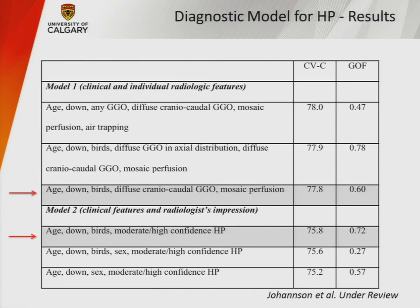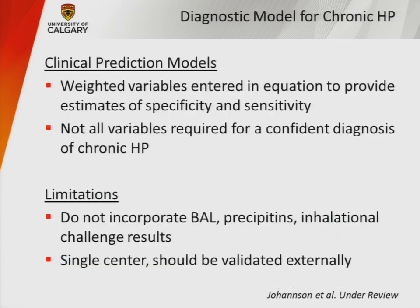For model one, based on individual radiographic features scored on HRCT, the important variables were age — typically middle age, since younger patients are more likely to have CTD and older patients more likely to have IPF — a history of down or bird exposure, and diffuse ground glass opacities with mosaic perfusion, which was highly predictive. A second model using age, down or bird exposure, and an expert chest radiologist's moderate-to-high confidence in an HP pattern also had very good performance characteristics.